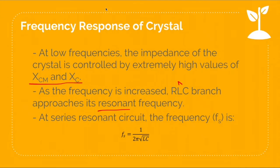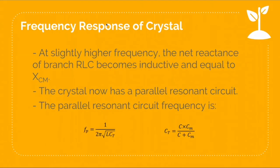If we increase the frequency a little bit higher, the reactance of the inductor increases and the series RLC branch becomes inductive in nature. The crystal now acts as a parallel resonant circuit, offering very high impedance. The frequency at which the vibrating crystal behaves as a parallel resonant circuit is called the parallel resonant frequency, fp, which equals 1 over 2π times the square root of L times Ct, where Ct is the product of C and Cm divided by the sum of C and Cm.